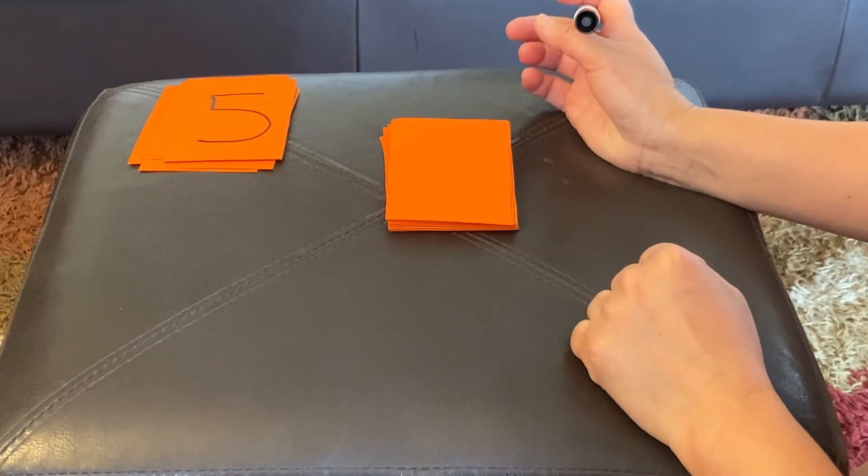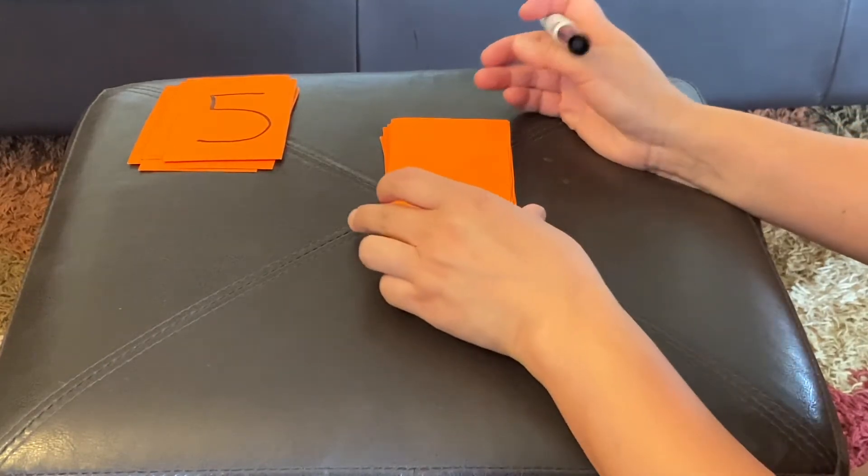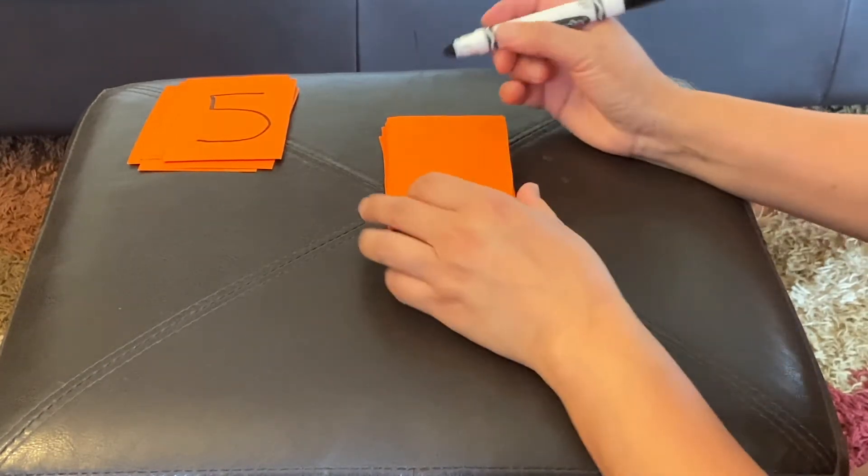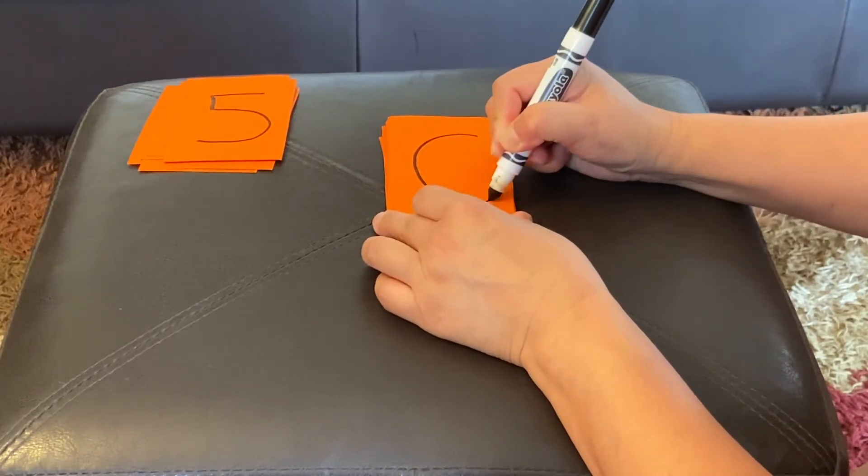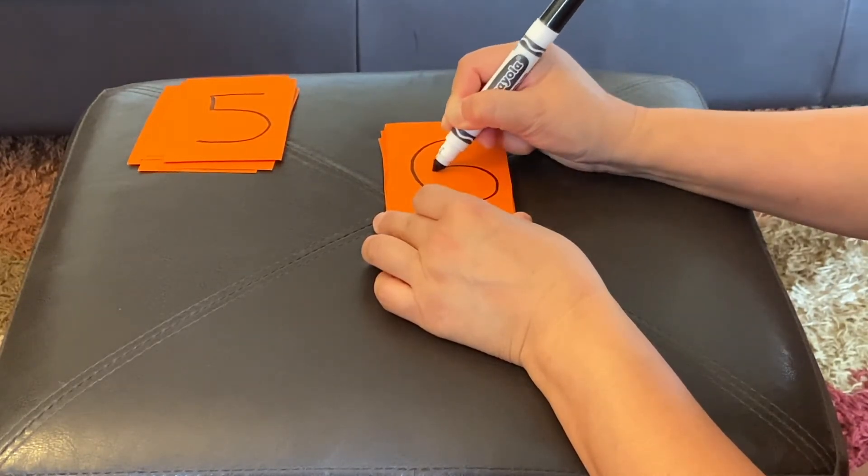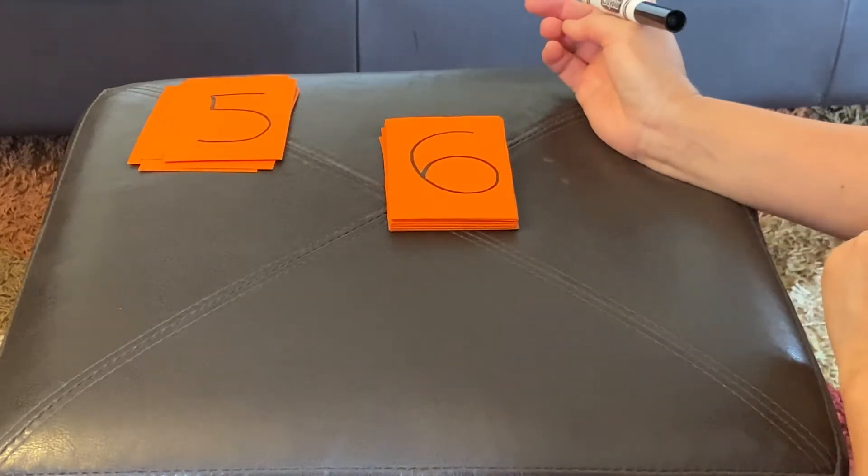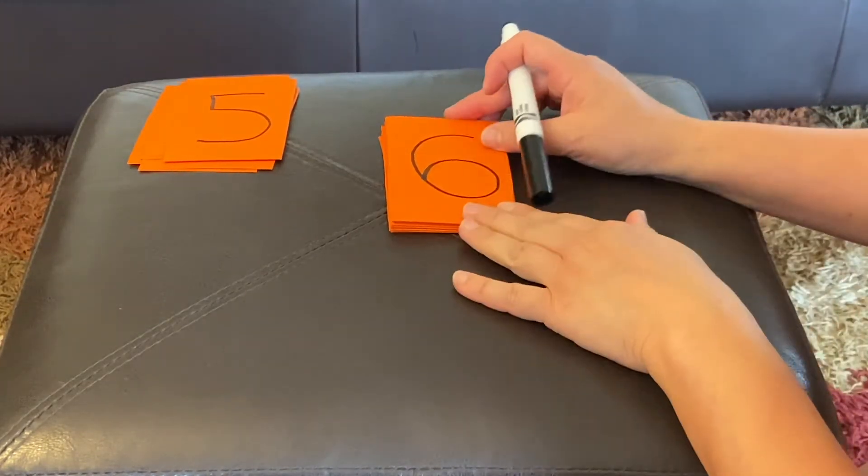My six is like a C. Oh, it's a magic C. So, I'm going to make a curve, and then I keep curving in, curving in, curving in, until I touch the other side. Six.